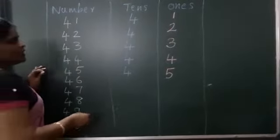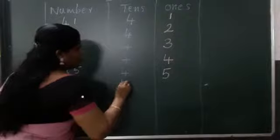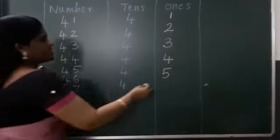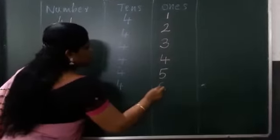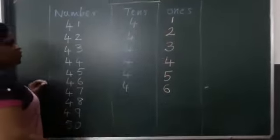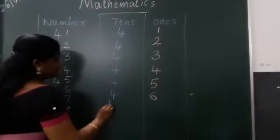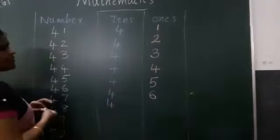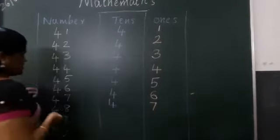4, 6, 46. 4 tens, 6 ones. 4, 7, 47. 4 tens, 7 ones.